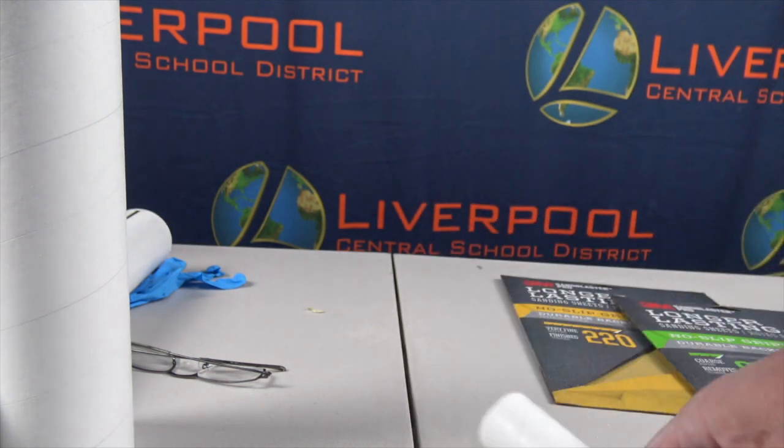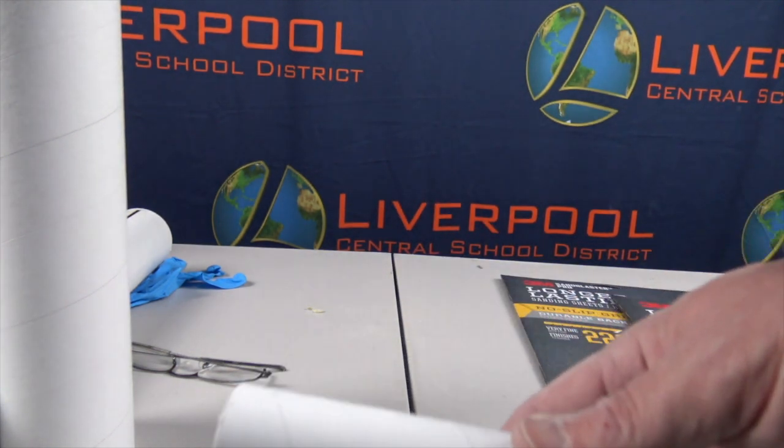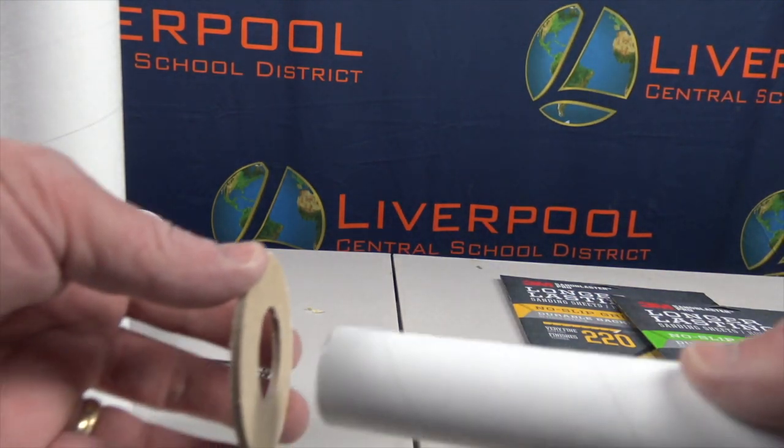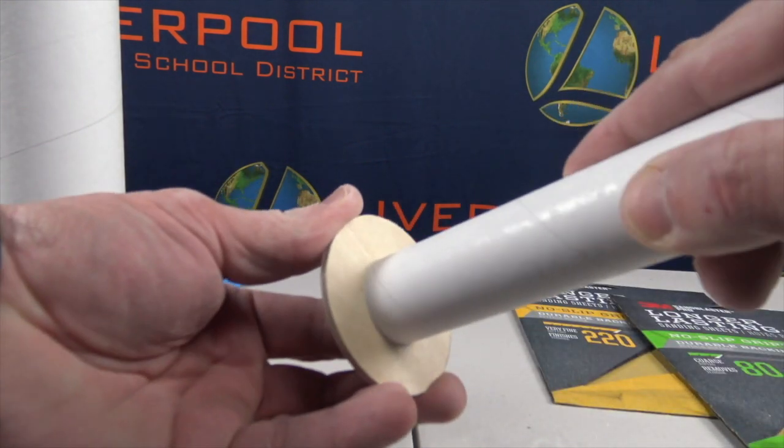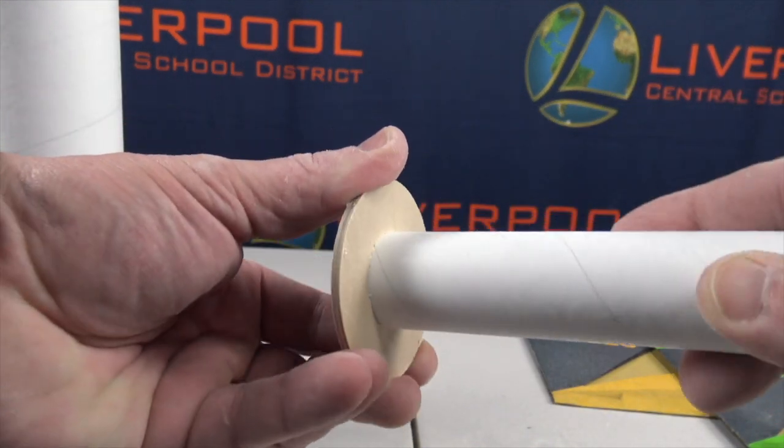This is what we're going to use to create our motor mount. It's important when you work with the motor mount, the wooden pieces, that the tube fits nice and snug.